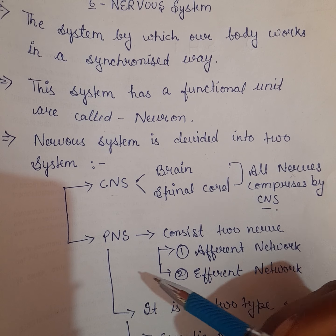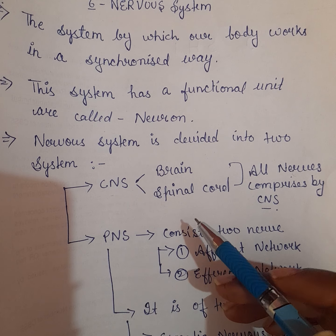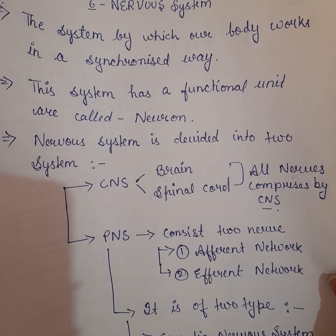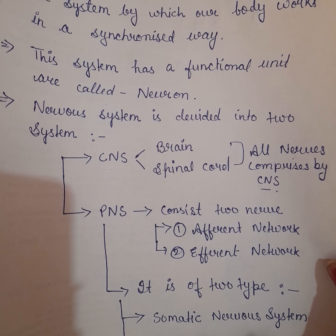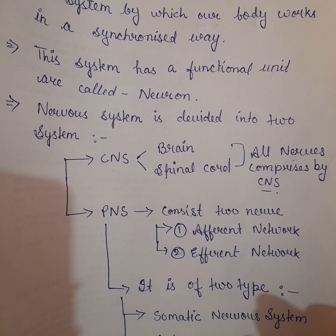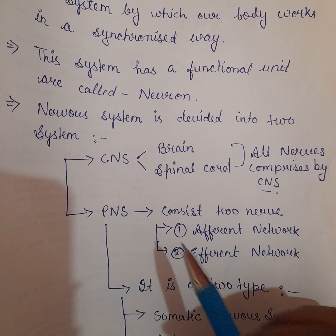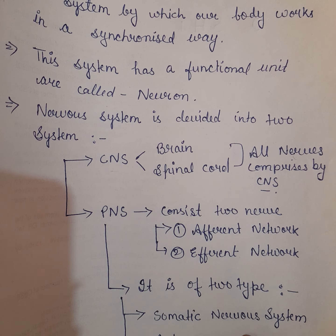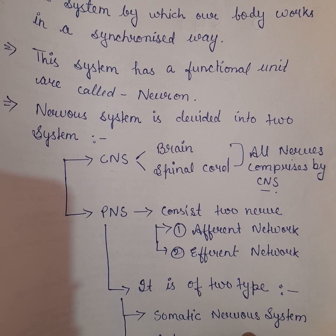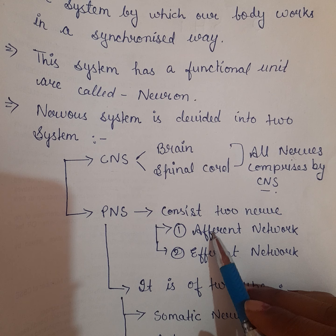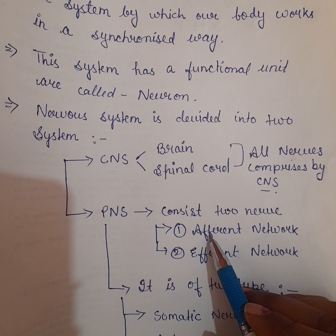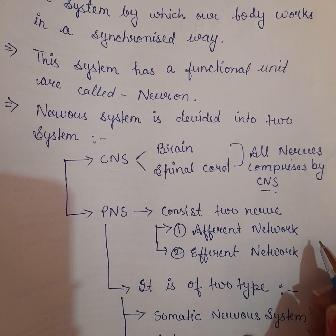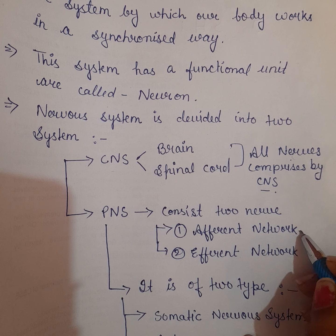Second part hai hamara PNS — peripheral nervous system. Peripheral nervous system mein do types ki nerves aati hain: ek hai afferent network aur doosri hai efferent network, ya phir aap inhe afferent aur efferent neurons bhi bol sakte hain.